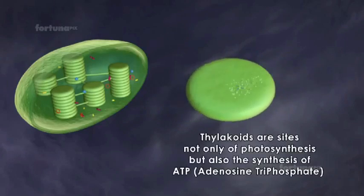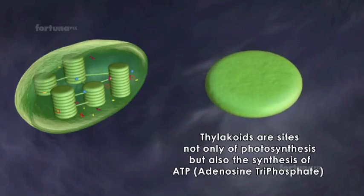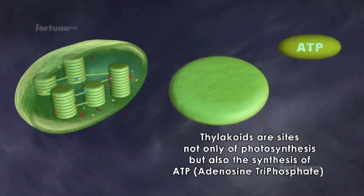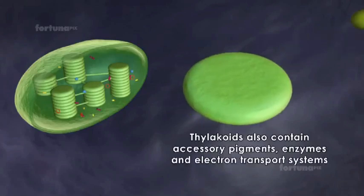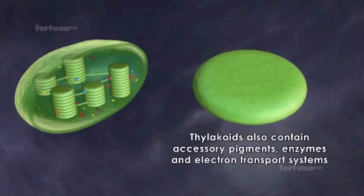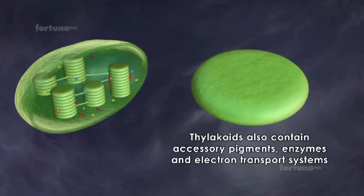Thylakoids are the sites not only of photosynthesis but also the synthesis of ATP, otherwise known as adenosine triphosphate. The thylakoids also contain accessory pigments, enzymes, and electron transport systems.